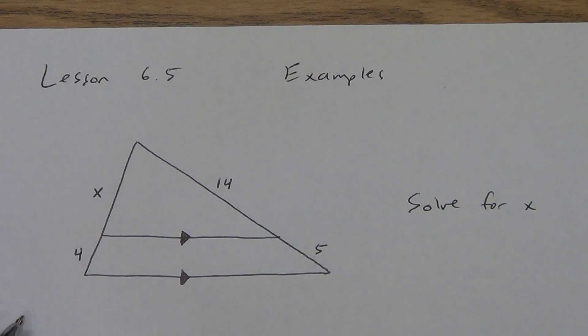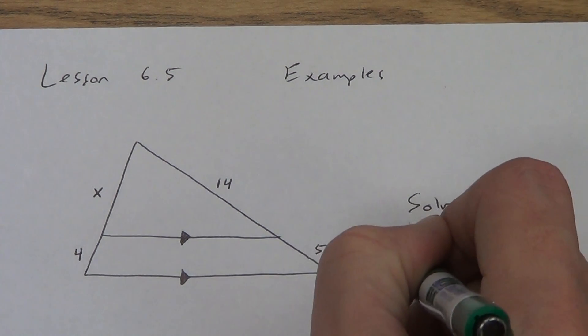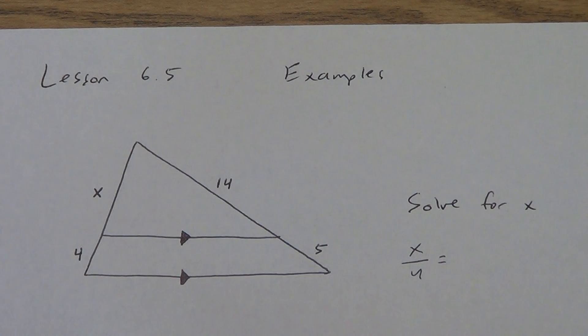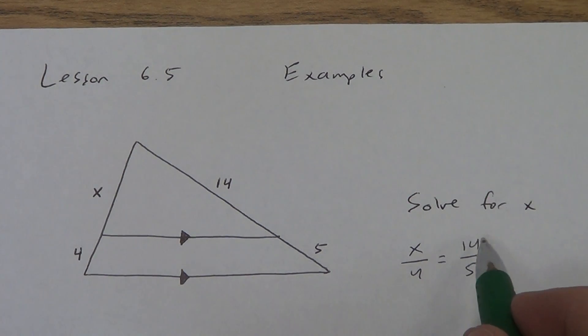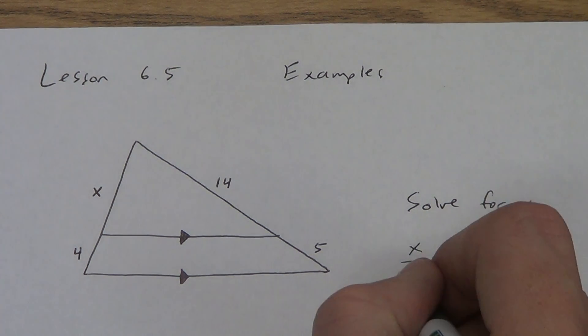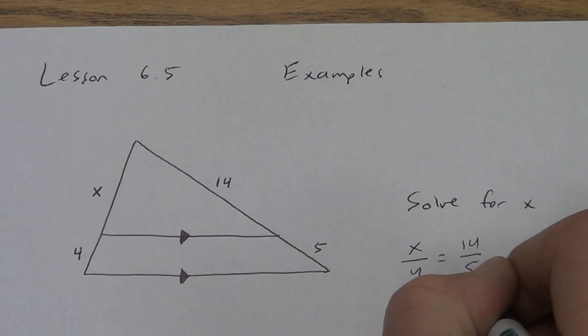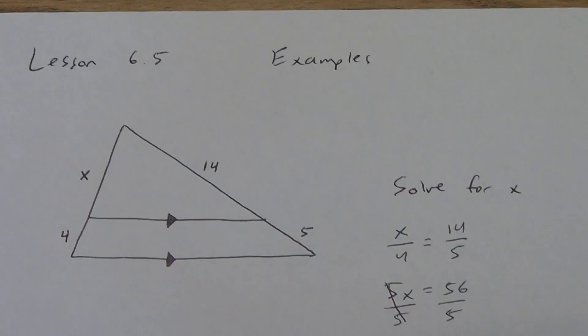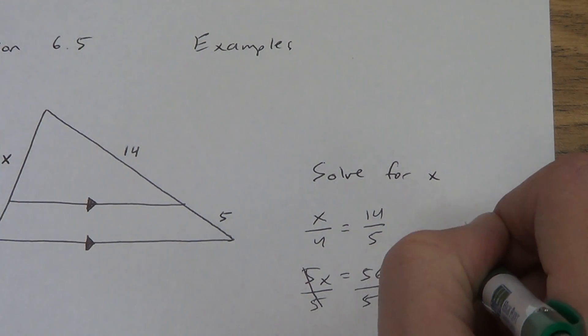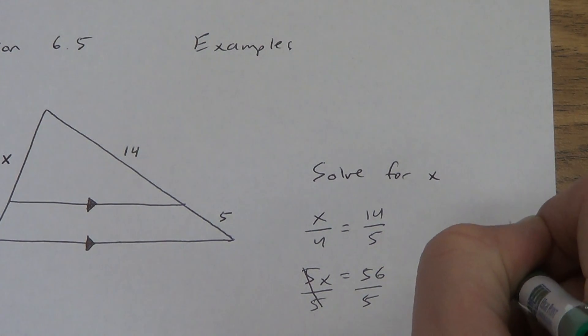What does it look like? x over 4 equals 14 over 5. Do not cancel here. I see some of you doing this on your homework. You put a 7 and a 2. As soon as you do that, you're automatically wrong. Do not cancel across an equal sign. Cross multiply: 5x equals 56.